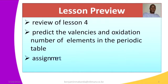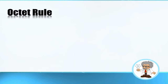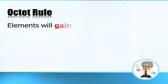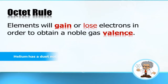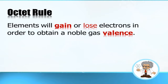Today we are going to discuss predicting the valencies and oxidation numbers of elements in the periodic table. After that we will have an assignment to help us understand the discussion. We will begin with an overview and demonstration to understand what oxidation numbers and valencies are. The first thing we need to understand is the octet rule.